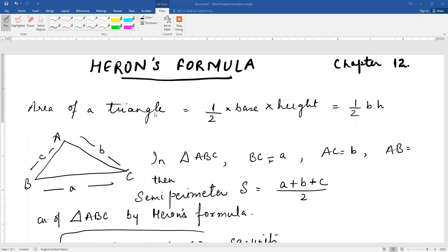We already know that area of a triangle is half base into height. Short mein ham 1 by 2 B into H karke likh lete hai.